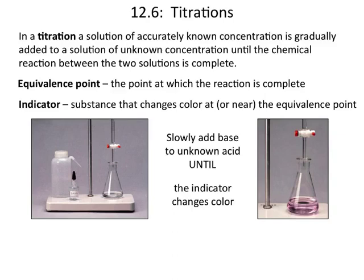You want this reaction to just reach the point at which it's finished, and that point is called the equivalence point, where the reaction is complete. You need some way to determine when your equivalence point happens — if you've got one clear liquid and another clear liquid, how do you know the reaction is done? For an acid-base reaction, which is our more commonly used titration, you add a molecule called an indicator that changes color at or near the equivalence point.